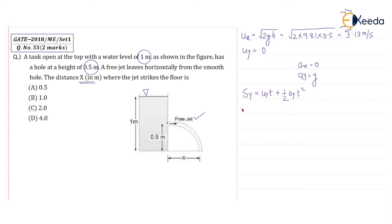So sy equal to uy into t plus half at square, in the y direction, t square. So sy distance, distance in the y direction is 0.5, so 1 by 2 you can write. What is uy? uy is 0, you can put 0 here plus half into acceleration in the y direction is g, into t square. So this half gets cancelled, so I am getting the value of time, t is equal to root of 1 by g.